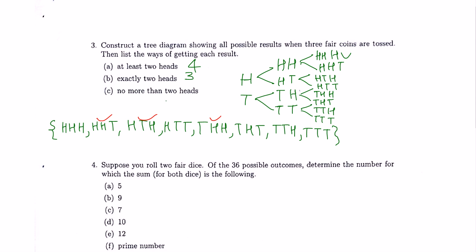There are one, two, three ways to get exactly two heads. Part C: no more than two heads means either two heads, one head, or zero heads. Three heads does not count. Counting all outcomes with zero, one, or two heads gives seven cases.